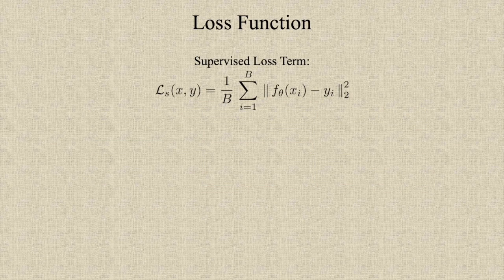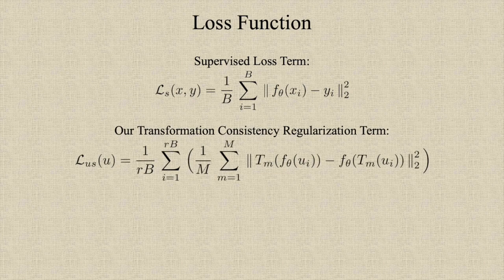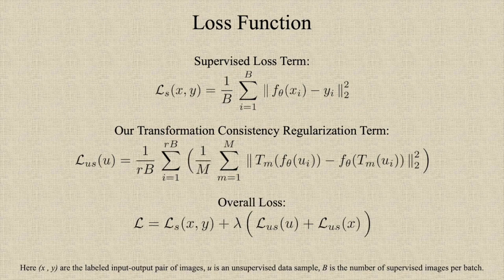The loss function used for training our method constitutes of two parts. Firstly, we have the conventional supervised loss term, where x and y are the input and output pair and b is the number of supervised images per batch. Additionally, we have the transformation consistency regularization loss term, which is applied over the supervised data as well without making use of the groundtruth label y. Here r is the ratio of the number of unsupervised images to the supervised images in a batch during training. The overall loss is the weighted combination of the supervised loss term and the proposed term.